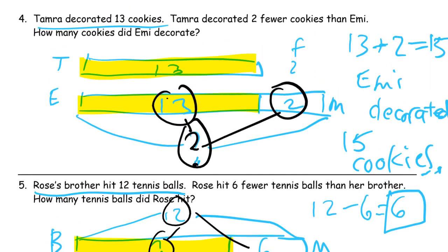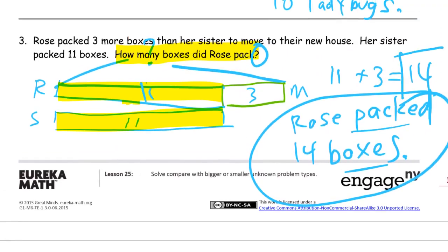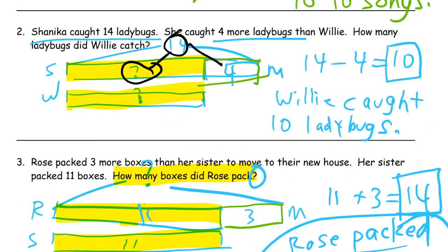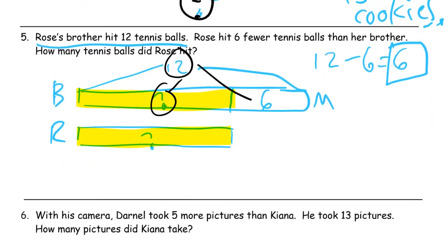I forgot to box the answer on a couple of the earlier ones, so I'm going to go back and check — sometimes it's like that, you remember something and just go back and fix it. And what is this six for? Let's look at the question: how many tennis balls did Rose hit? Rose hit six. This part is also six. So Rose hit six tennis balls.